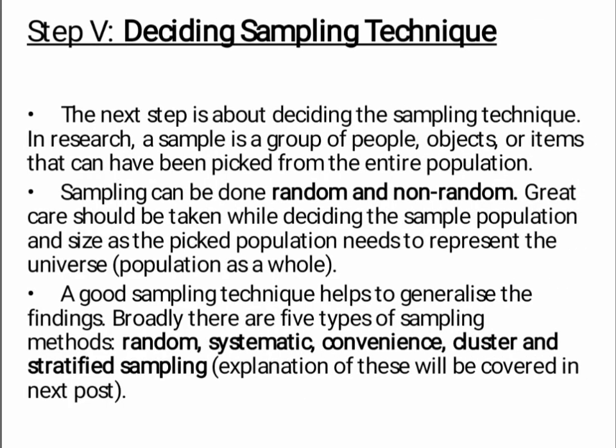The next step is about deciding the sampling technique. In research, a sample is a group of people, objects, or items that have been picked from the entire population. Sampling can be done randomly and non-randomly. Great care should be taken while deciding the sample population and size, as the picked population needs to represent the universe. A good sampling technique helps to generalize the findings.